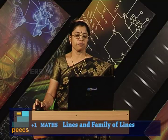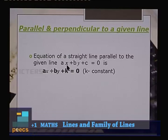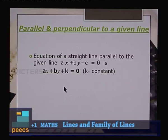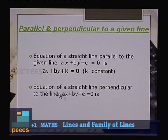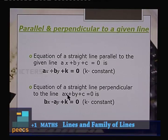Equation of a straight line parallel to ax + by + c = 0 is ax + by + k = 0 — the two lines differ only in the constant term. Equation of a straight line perpendicular to ax + by + c = 0 is bx − ay + k = 0, where the coefficients of x and y are interchanged and the sign between them changes.